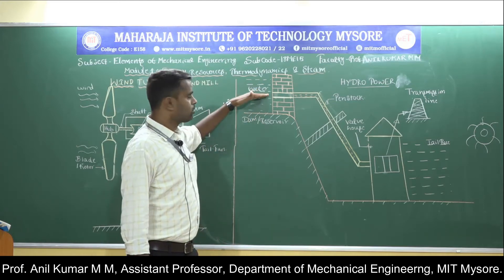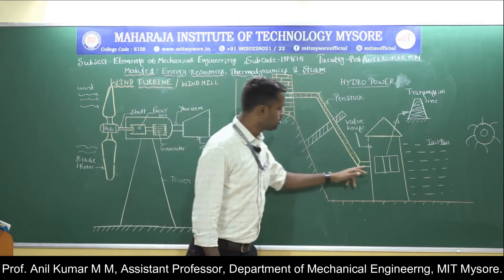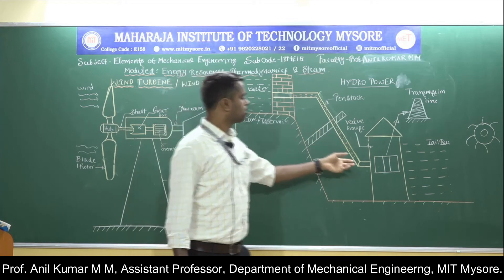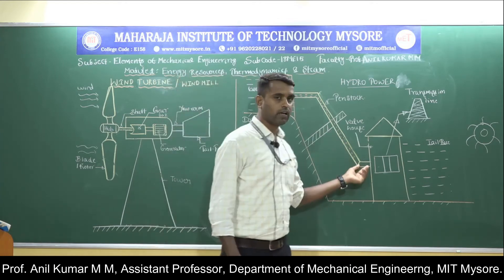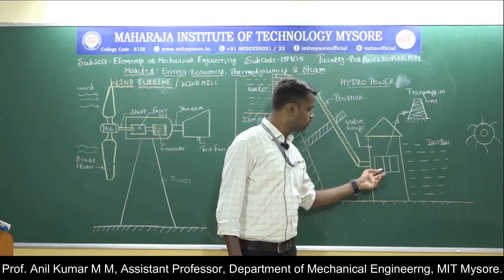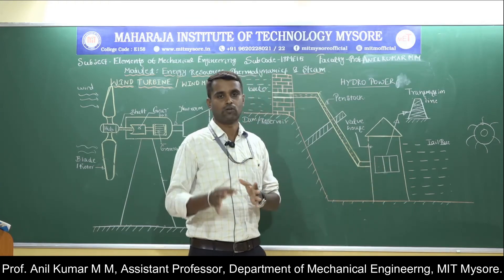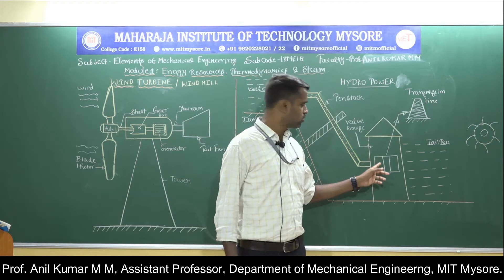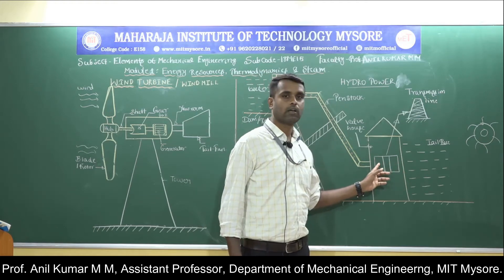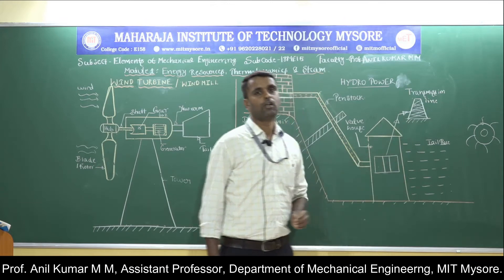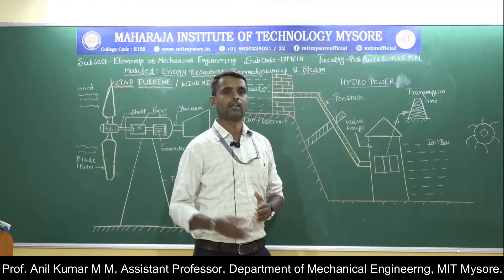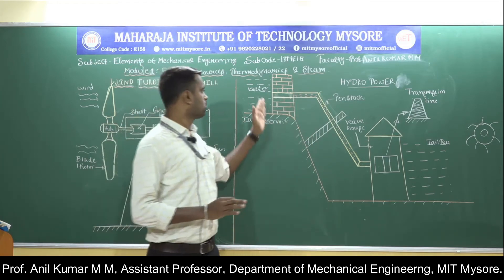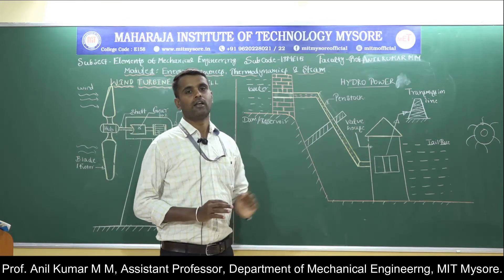That mechanical work is utilized to drive the generator and produce electrical energy, which can be utilized in various applications through the transmission line. After doing work, the water is discharged through the draft tube into the tailrace. In summary, in the hydroelectric power plant, water from the reservoir enters the nozzle through the penstock; its potential energy is converted into kinetic energy in the nozzle; the kinetic energy drives the turbine, producing mechanical work; and the generator converts that mechanical work into electrical energy.